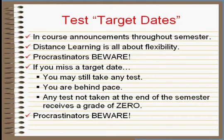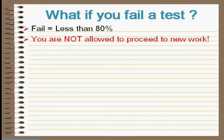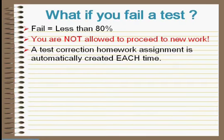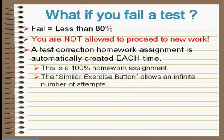If you actually fail a test — meaning you got less than an eighty percent on a mastery-based test — you will not be allowed to proceed until you get at least an eighty percent. A test correction homework assignment will automatically be created and you should dig right back into it. This is a homework assignment, so you have to get a hundred percent on it. You can take the test as many times as you want, and you can redo each homework exercise as many times as you want until you get it right — so there's no reason not to get a hundred percent on homework.